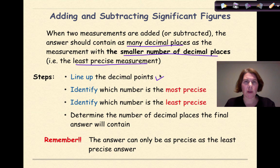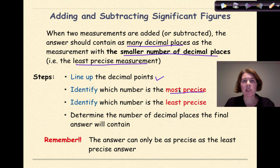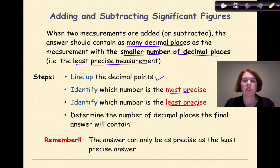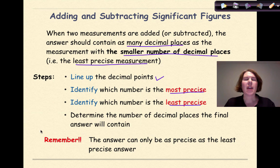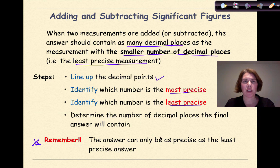Step one: line up the decimal points. Step two: identify which number is the most precise — the one with the greatest number of decimal places. Then identify the number which is the least precise — the one that goes out the fewest decimal places. Then determine the number of decimal places the final answer will contain. Remember, your answer can only be as precise as the least precise measurement.